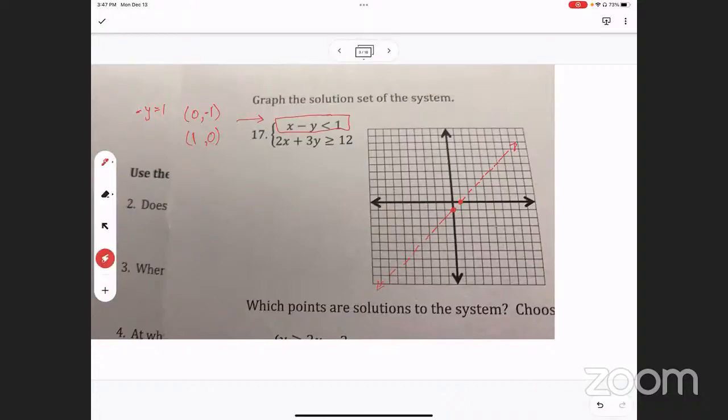And then now I have to just shade it in a certain direction. I'm gonna test the point zero zero. Here's zero zero which is above the line, right? Is zero minus zero less than one? Is that true? Yeah it is true, which means I shade it up. So I'm just gonna shade my red graph up.